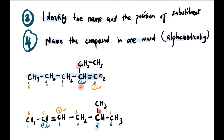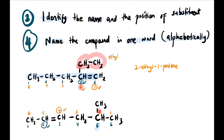Okay, next step — kita sekalikan step 3 and 4. Kita identify the name and position of substituent, and name the compound in one word, alphabetically. Kita bagi contoh yang tadi. Parent kita sudah setuju 2-pentene yang atas tu. Jadi, dia punya anak adalah ethyl, ethyl berada di carbon ke-2. So, 2-ethyl, 1-pentene — itu nama lengkap dia.